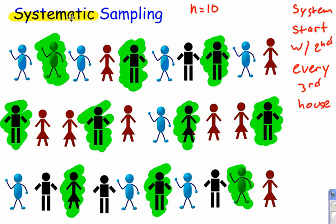So systematic sampling is kind of nice and that's how you would do it. But at the same time, systematic sampling sometimes might lead to something called bias. The bias in this case would be that I'm getting more of one type of stick man as opposed to the other type. Sometimes systematic sampling is okay, but you have to be careful — because in this case, it just so happened that there were 6 of the black stick men, only 2 of the blue stick men, and only 2 of the red stick girls. So systematic sampling — but you've got to be careful.